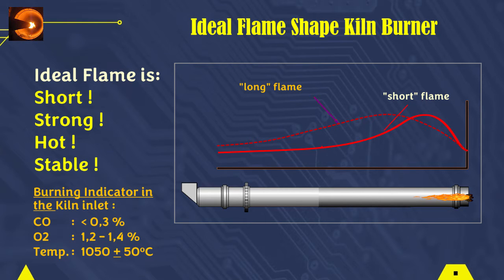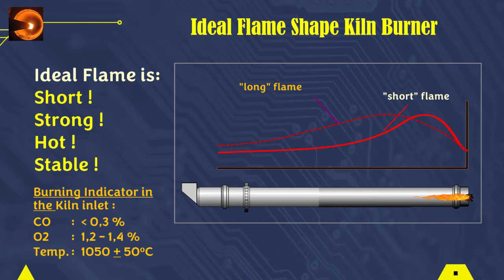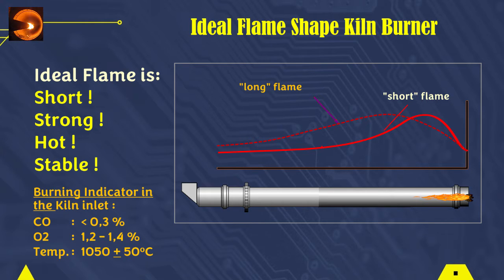Flames with high temperatures can be achieved if the quality of pulverized coal has less than 8% moisture content, residue at 90 microns is less than 12%, and does not fluctuate. The secondary air temperature should be more than 850 degrees Celsius.